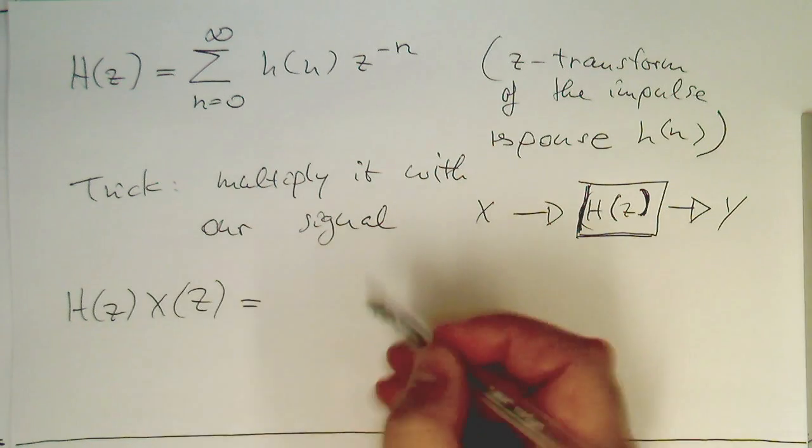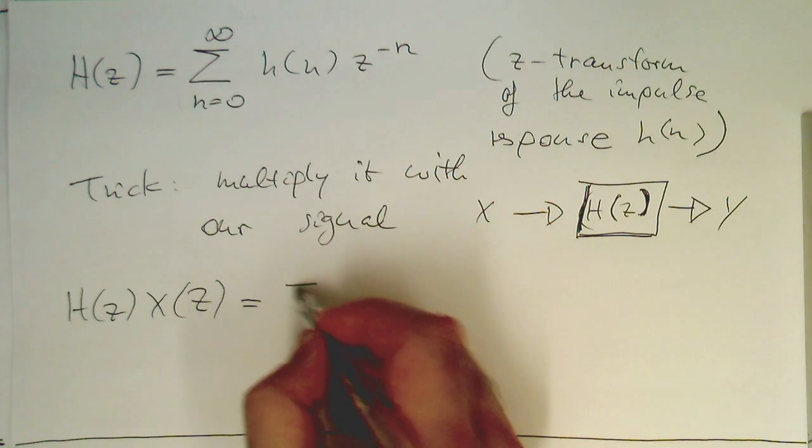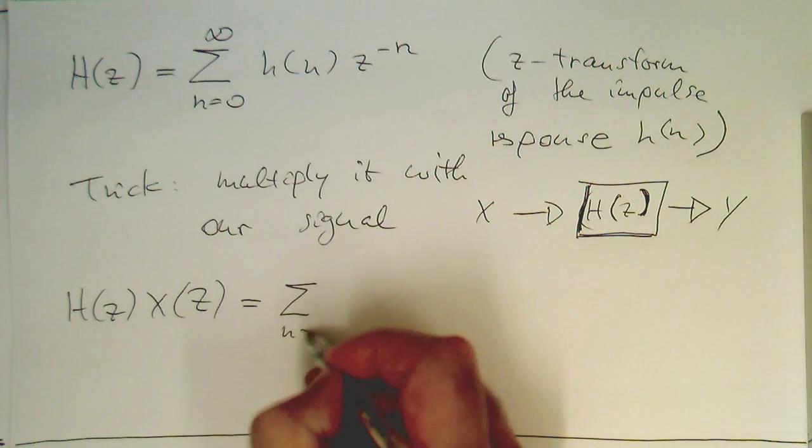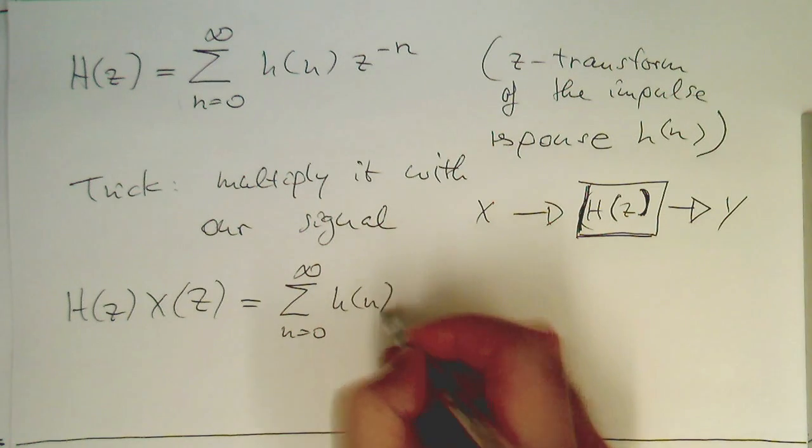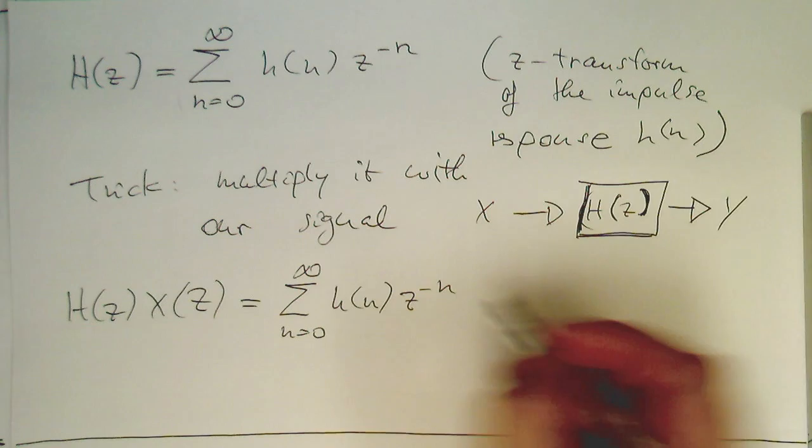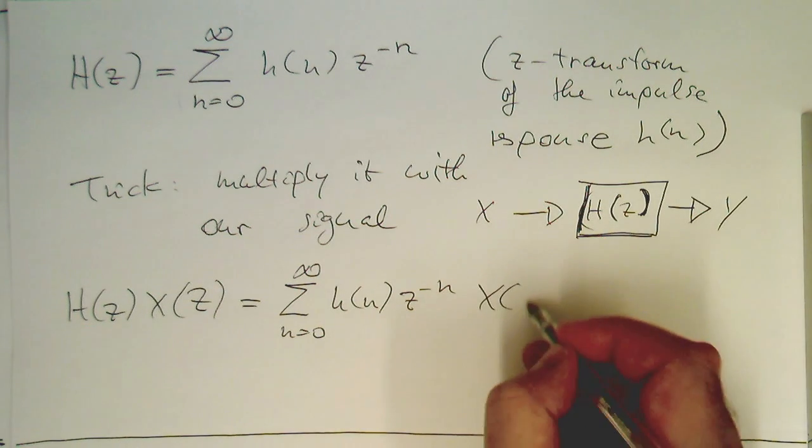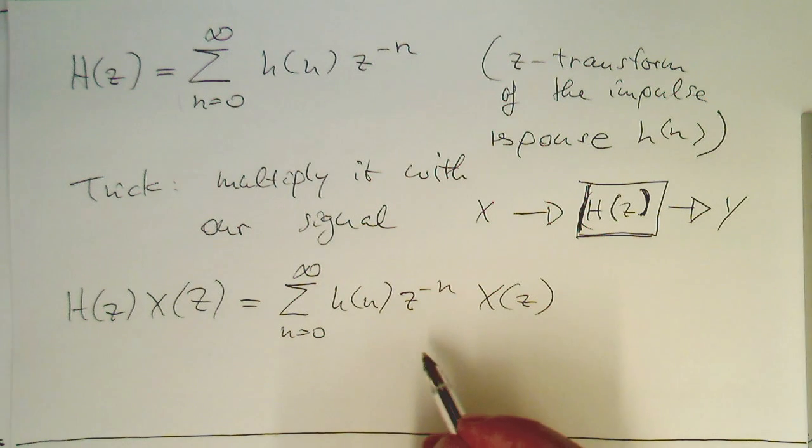Then this is per definition here of our function, sum of n equals zero to infinity, H(n) z to minus n, and then this is X(z).